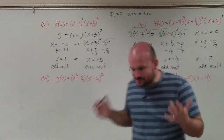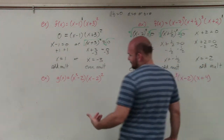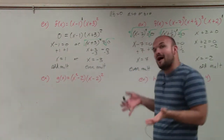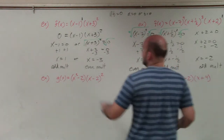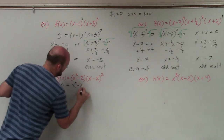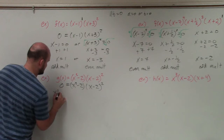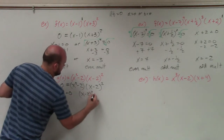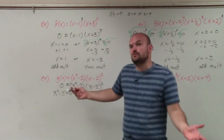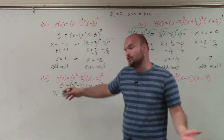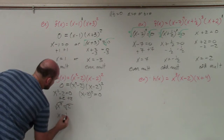Now these next two examples trip up students. The first difference is we have x squared inside the parentheses and one outside. Just follow the process: set everything equal to zero, then set each factor equal to zero. For x squared minus 2 equals zero, we add 2 to both sides to get x squared equals 2, then take the square root, giving x equals plus or minus the square root of 2. Remember, when you introduce the square root, you must take the plus or minus.